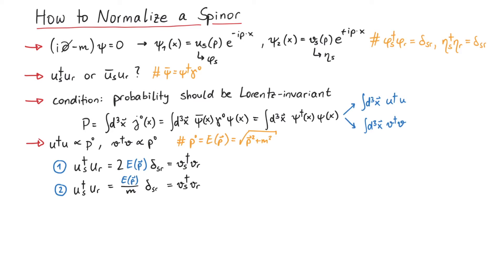Now, what about u bar u and v bar v? They are not independent. In fact, one can find a relation between u bar u and u dagger u, as well as for v.